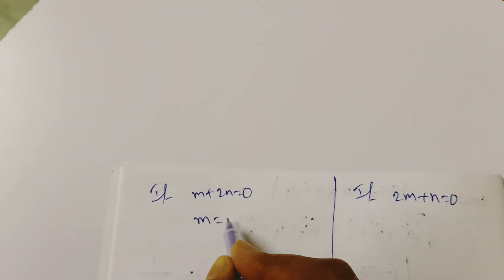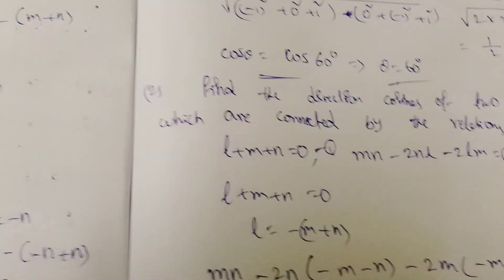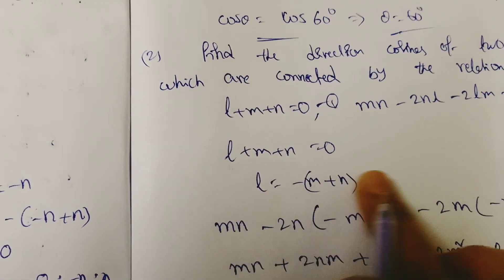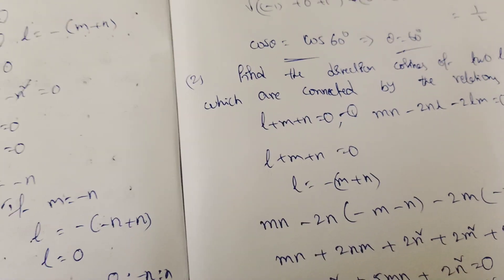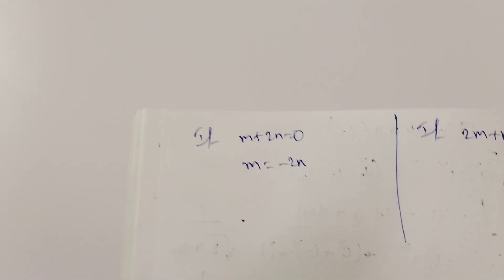From m plus 2n equal to 0 we get m equal to minus 2n. Substituting back into the first equation gives L. So we find L equal to minus n by 2, m equal to minus n, n equal to n — taking n as a parameter.